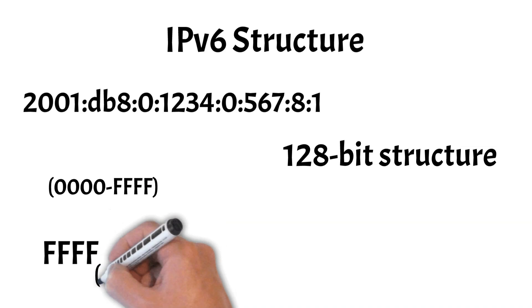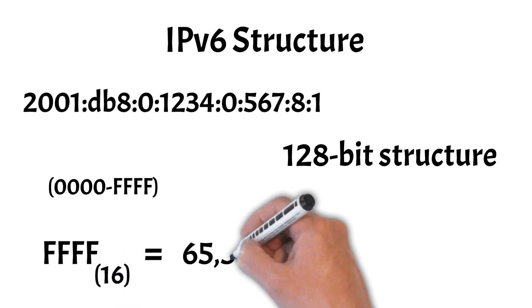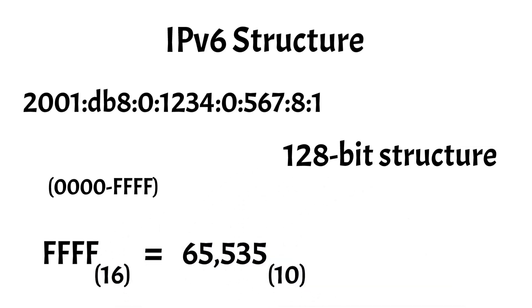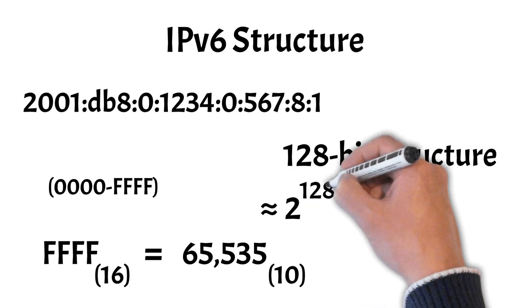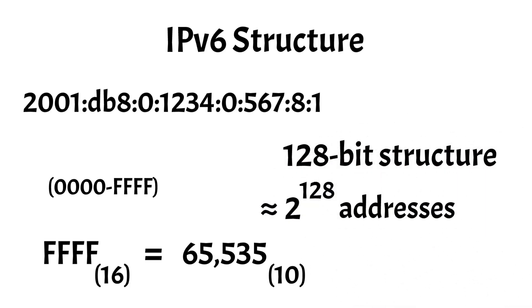FFFF in hexadecimal is equal to 65,535 in decimal. This allows for approximately 2 to the power of 128 unique addresses, effectively eliminating the shortage of IPv4 addresses.